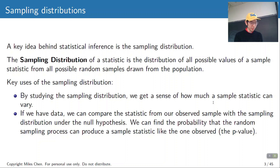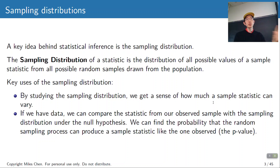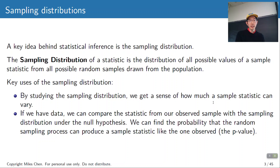We need a sampling distribution to be able to do statistical inference. The sampling distribution tells us what kind of values we can get for a sample statistic when we draw random samples from the population. By looking at the sampling distribution, we can get a sense of how much a sample statistic can vary. And if we have data, then we can compare the statistic from our data and compare that to the sampling distribution.